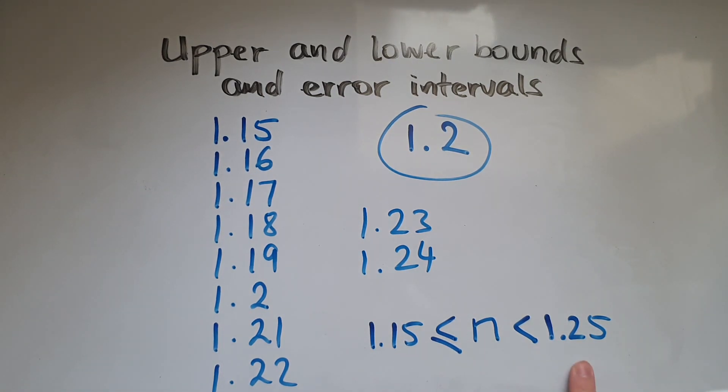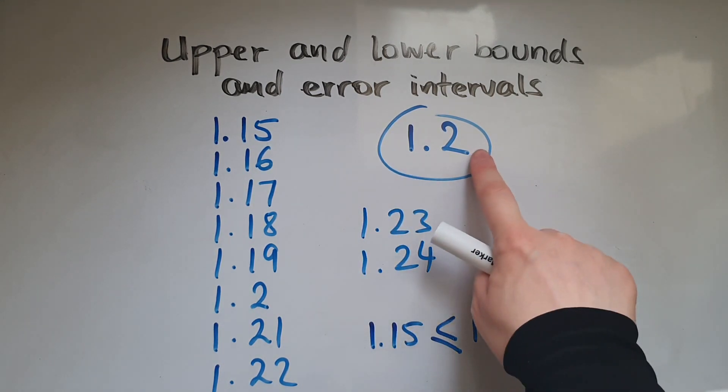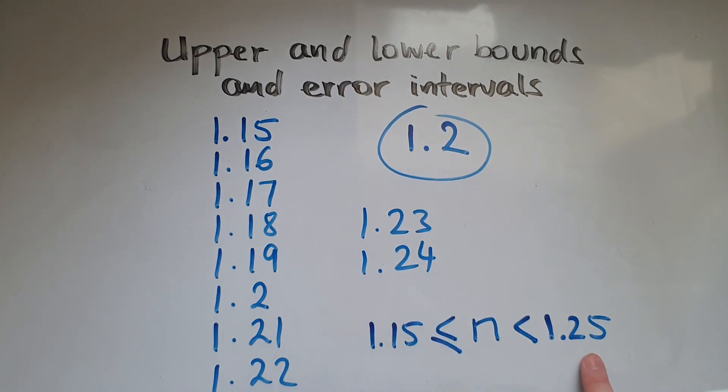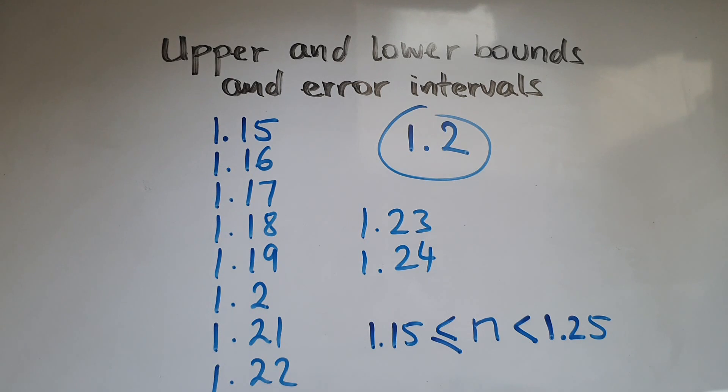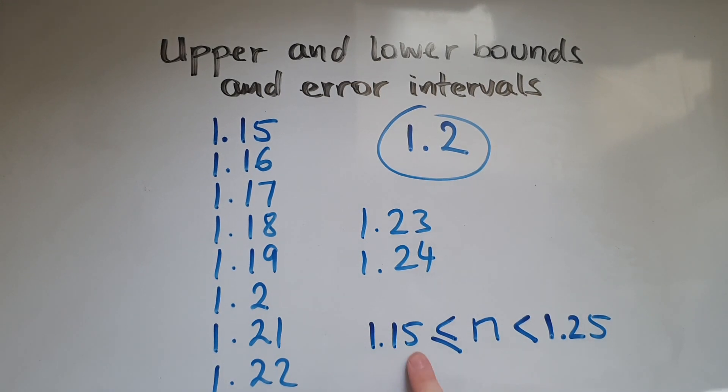A quick way to do this is, as the upper bound, if you compare them two, you just have a 5 after a number. Whereas the lower bound, you're taking away 1 from that last digit and put a 5 after.